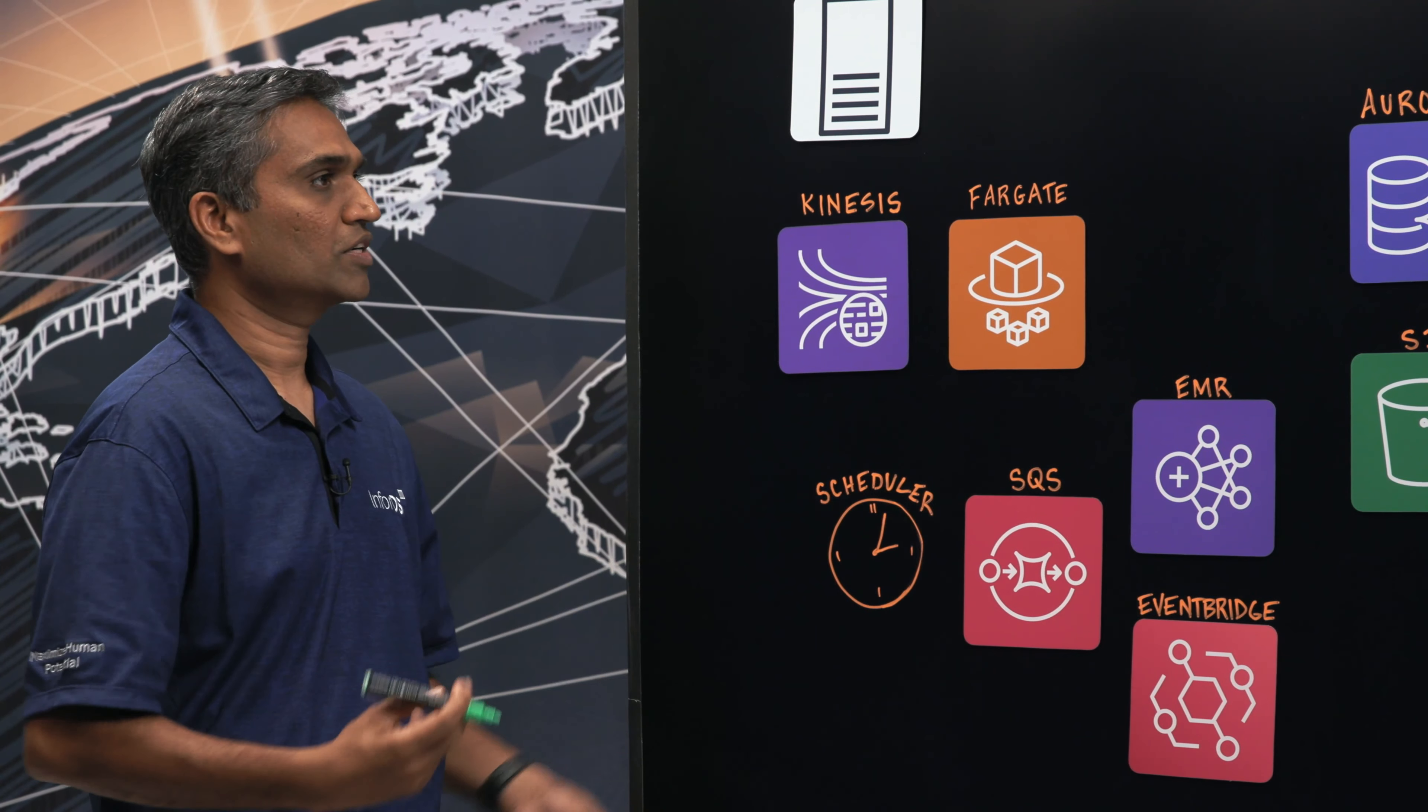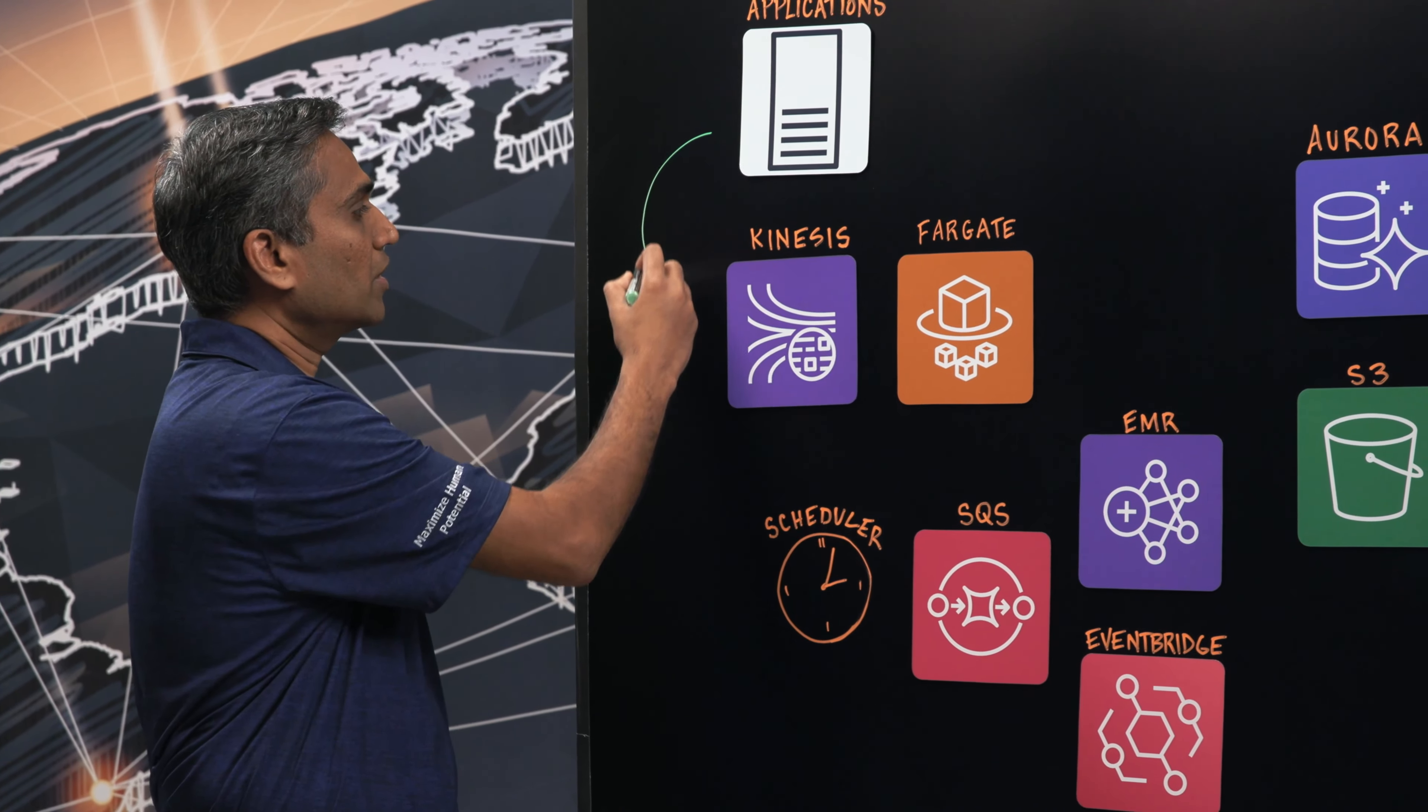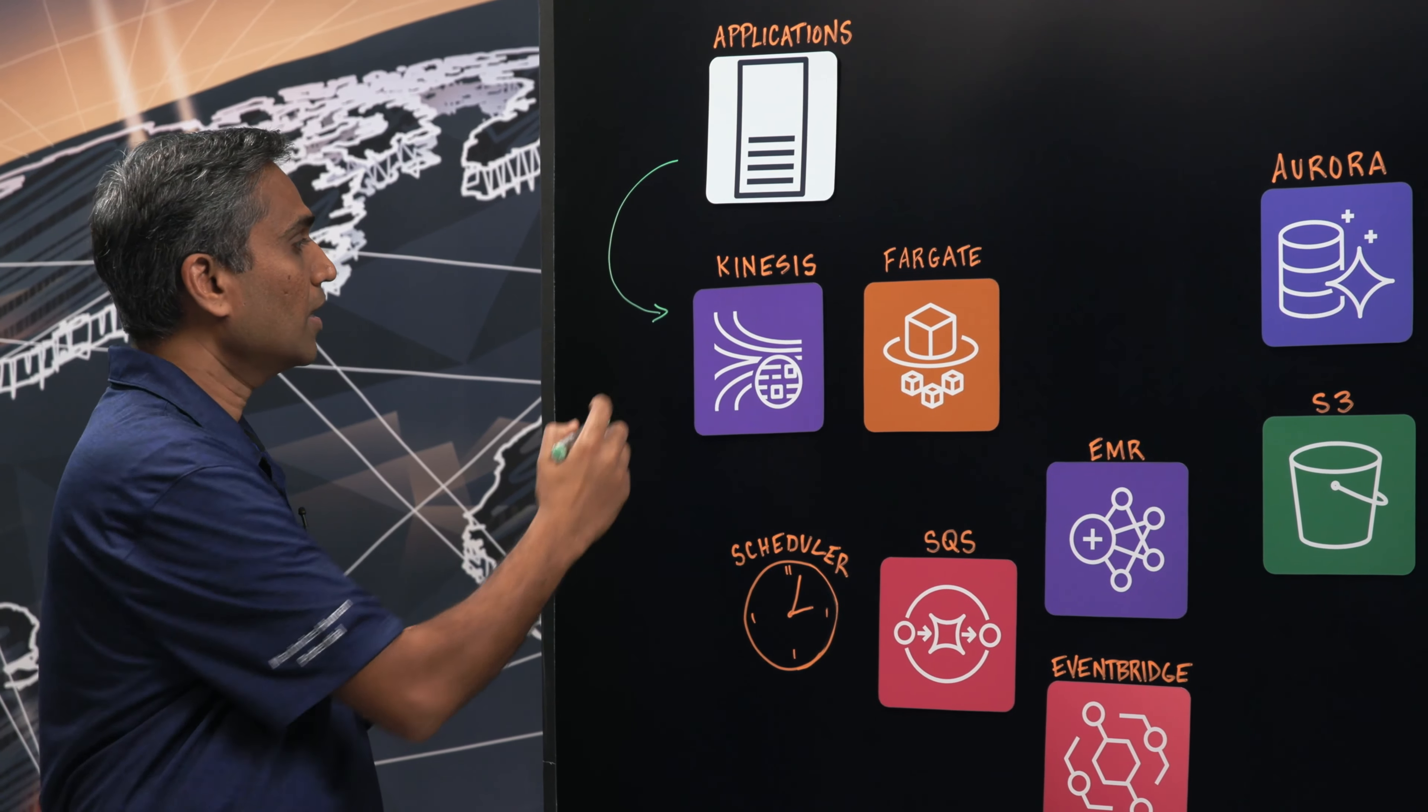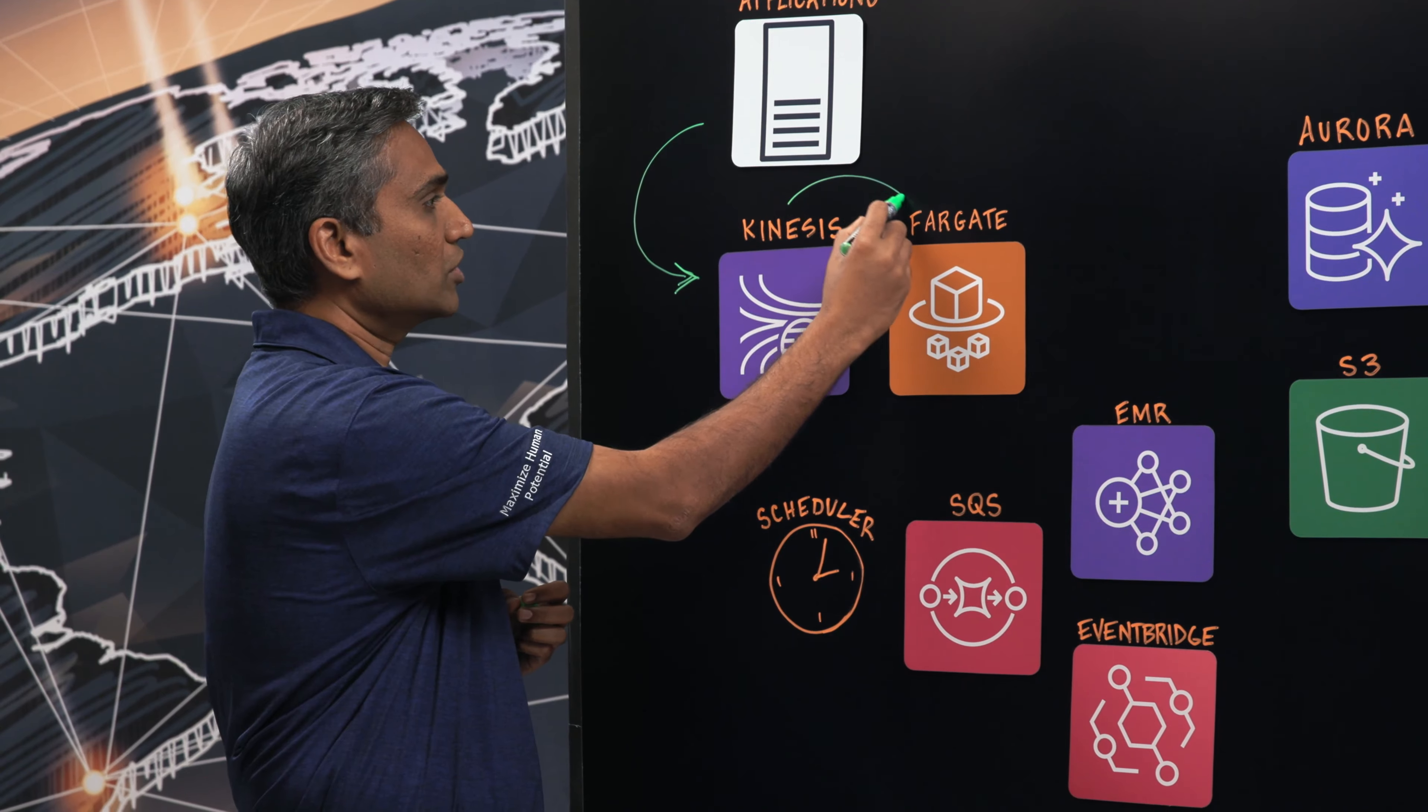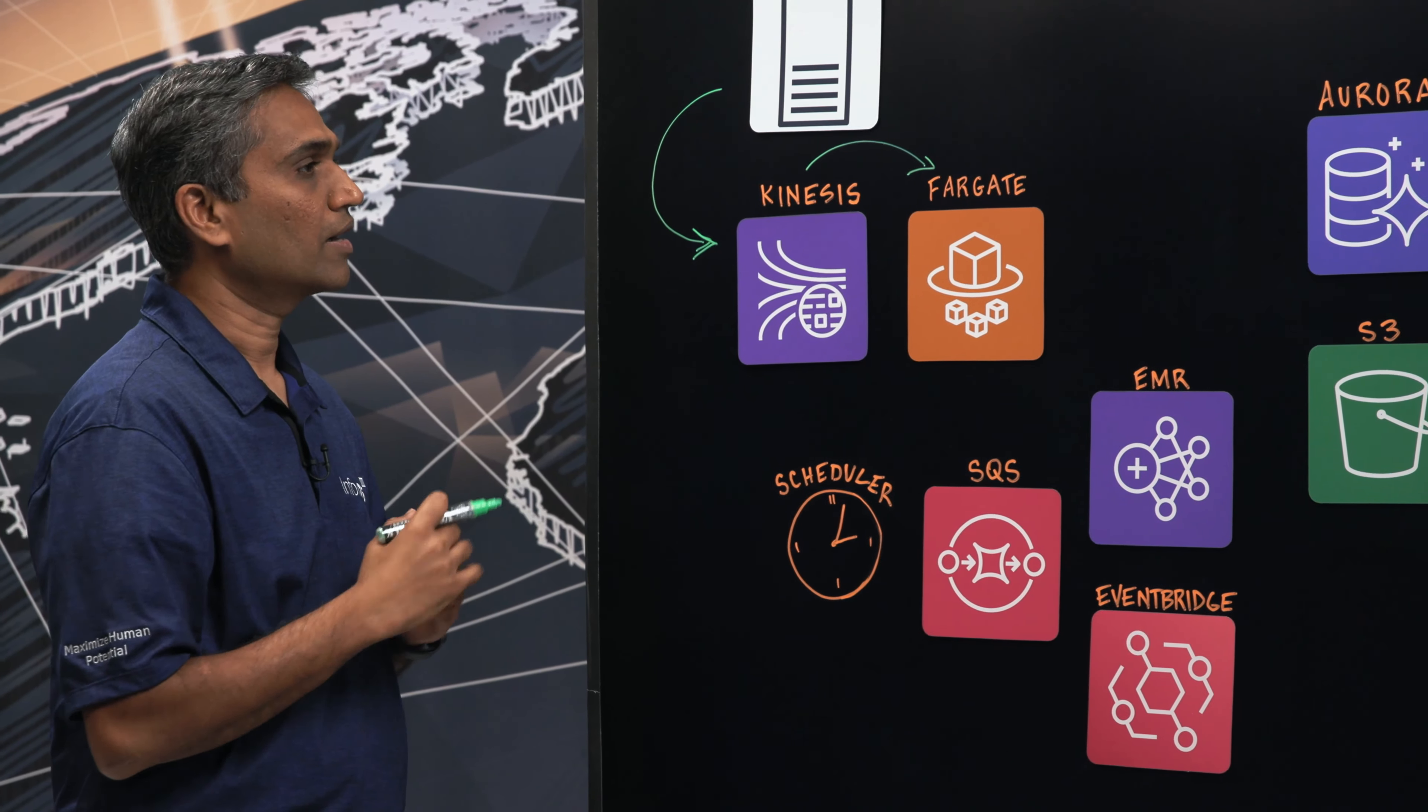So most of our customers have 10 to hundreds of applications and the applications generate a lot of data, both security as well as transactional data. And those transactions and security data is routed through the Kinesis stream into a service running on Fargate. And this service parses the data and after parsing the data...